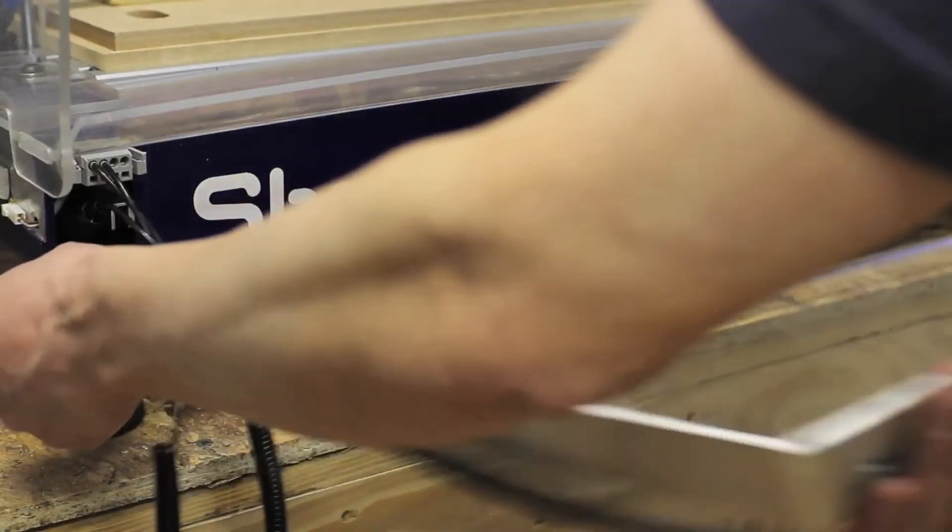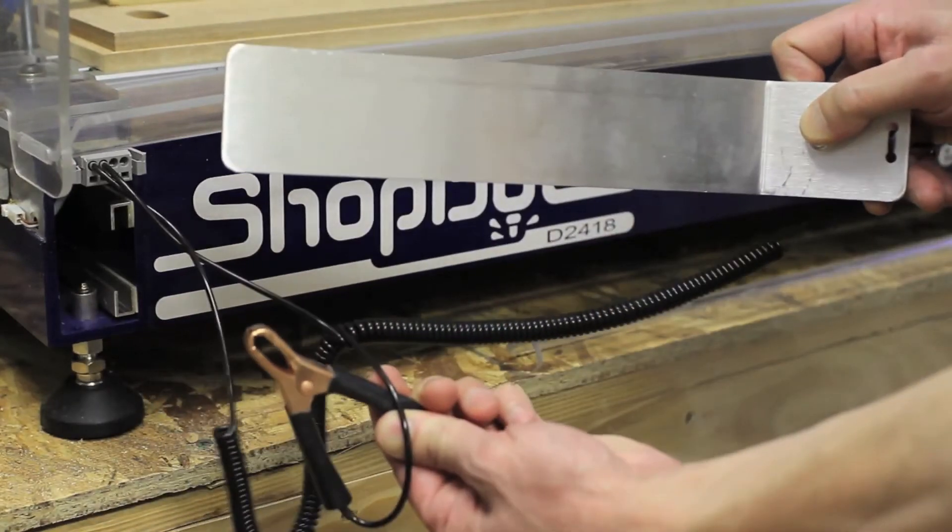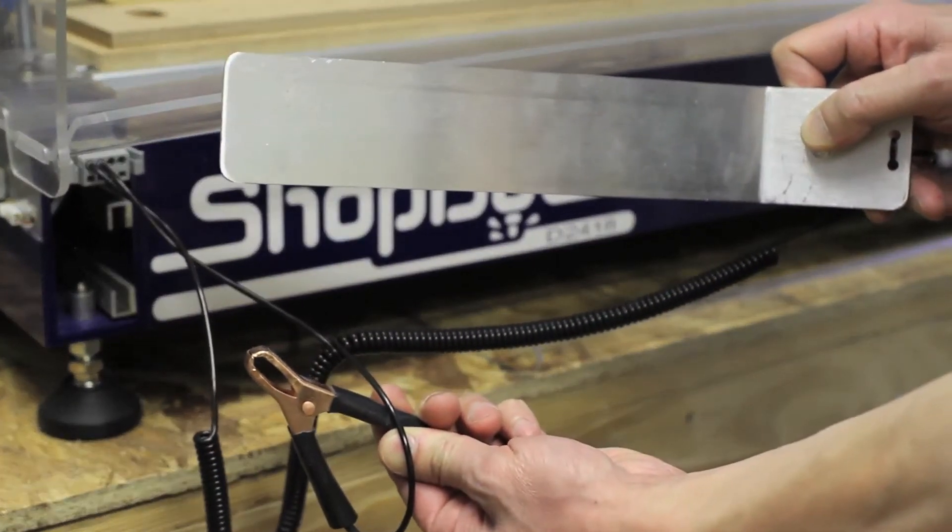You accomplish this calibration with this aluminum zeroing plate, also called a Z0 plate, and this alligator clip. This little operation will tell the machine exactly where the material begins and the bit ends.